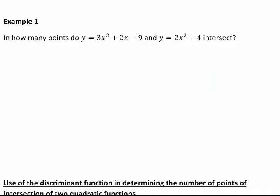In our first example, in how many points do y equals 3x squared plus 2x minus 9 and y equals 2x squared plus 4 intersect? If they intersect, we can set the left-hand side of these equations equal to each other, as any points of intersection must have the same x and y values for both functions. We can set 3x squared plus 2x minus 9 equal to 2x squared plus 4.